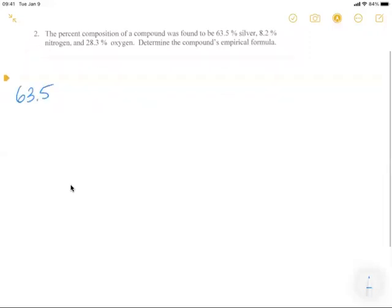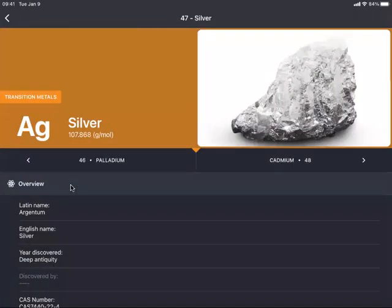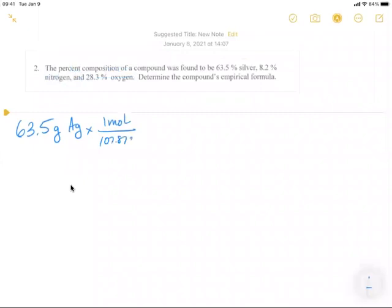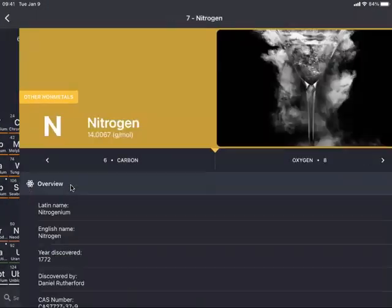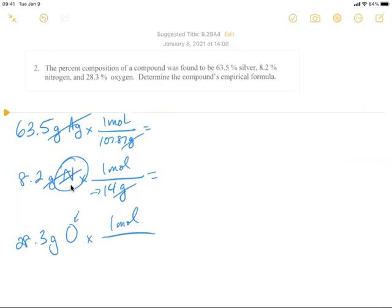We'll start with changing the percent to grams. So silver is Ag. And we're going to change it to moles. Ag is 107.87 grams. And I'm just going to set it up for the other two. Nitrogen mole. And I think it's 14. It's important to distinguish between nitrogen as being only one mole, not N2. And oxygen is just O, not O2, because you're not talking about oxygen gas. You're talking about elemental oxygen.